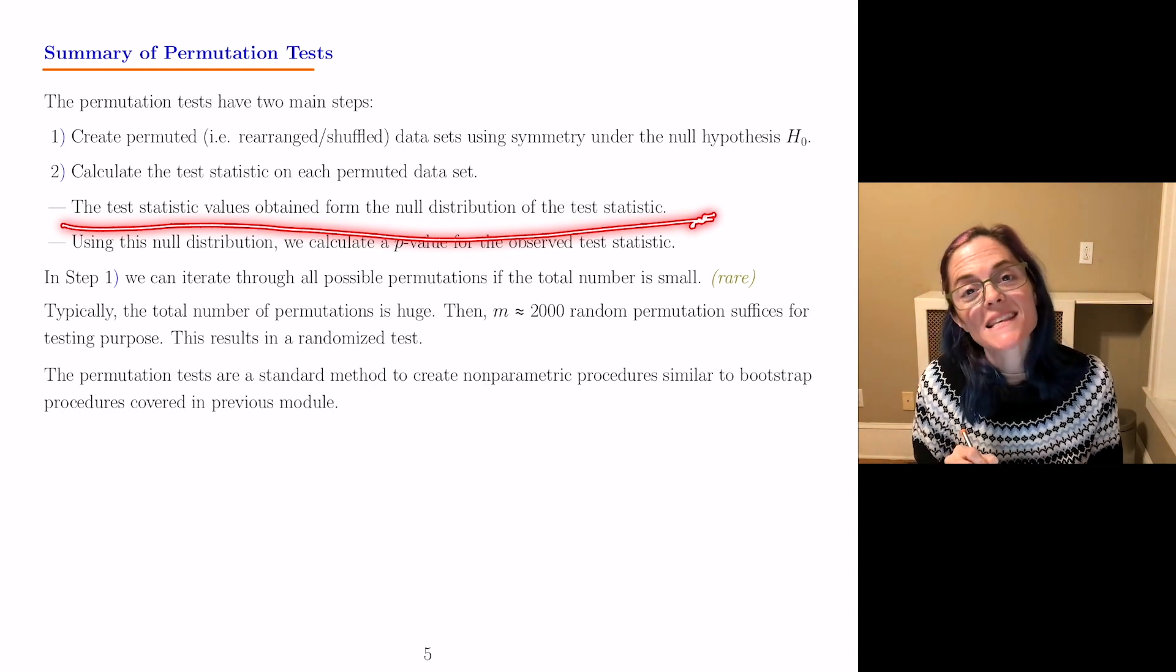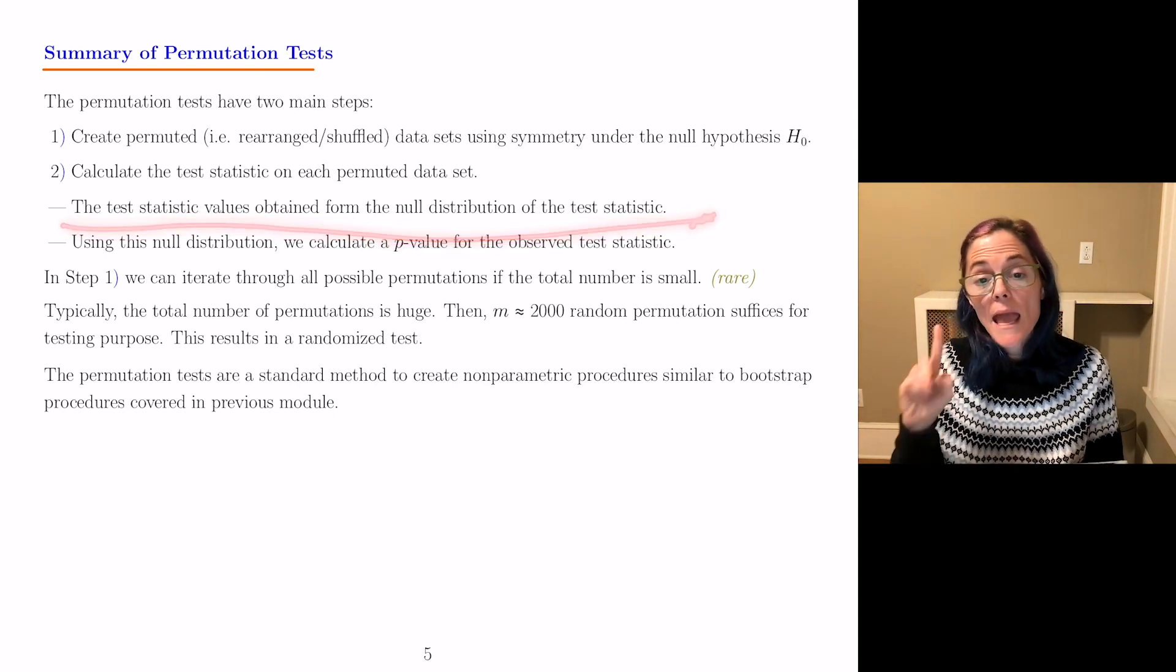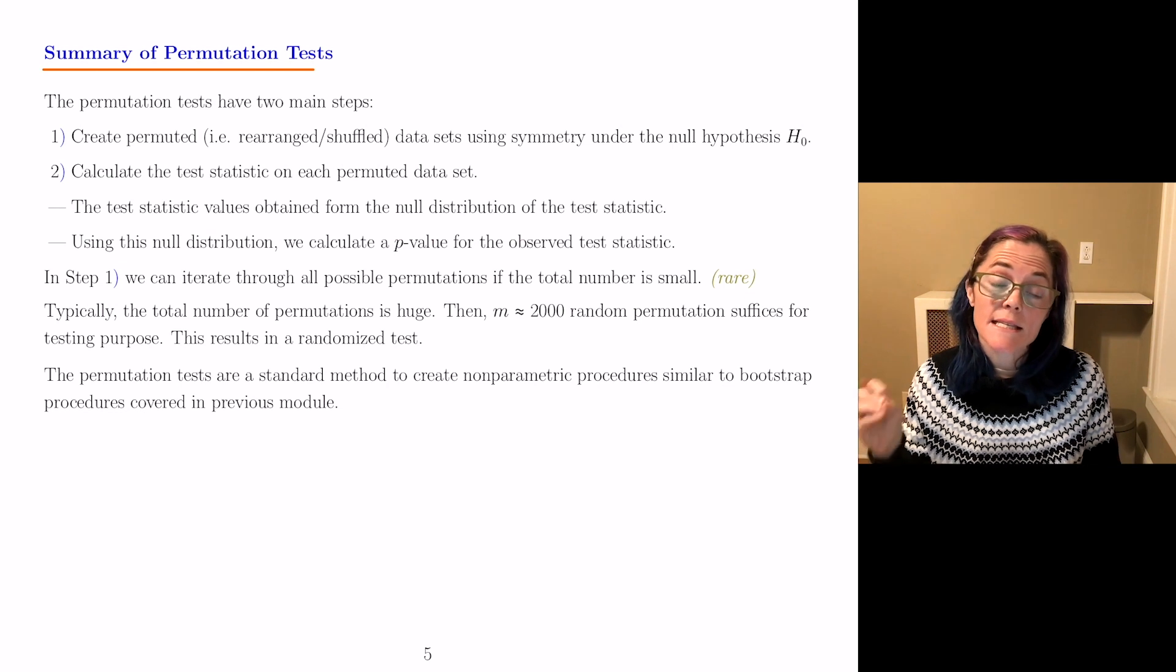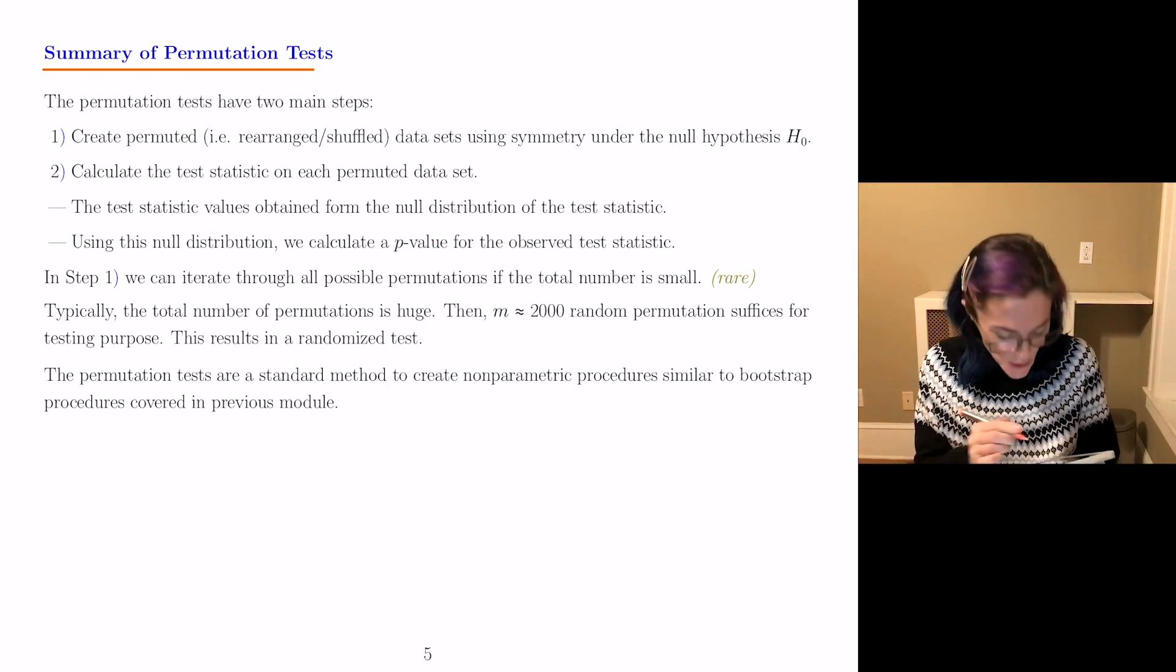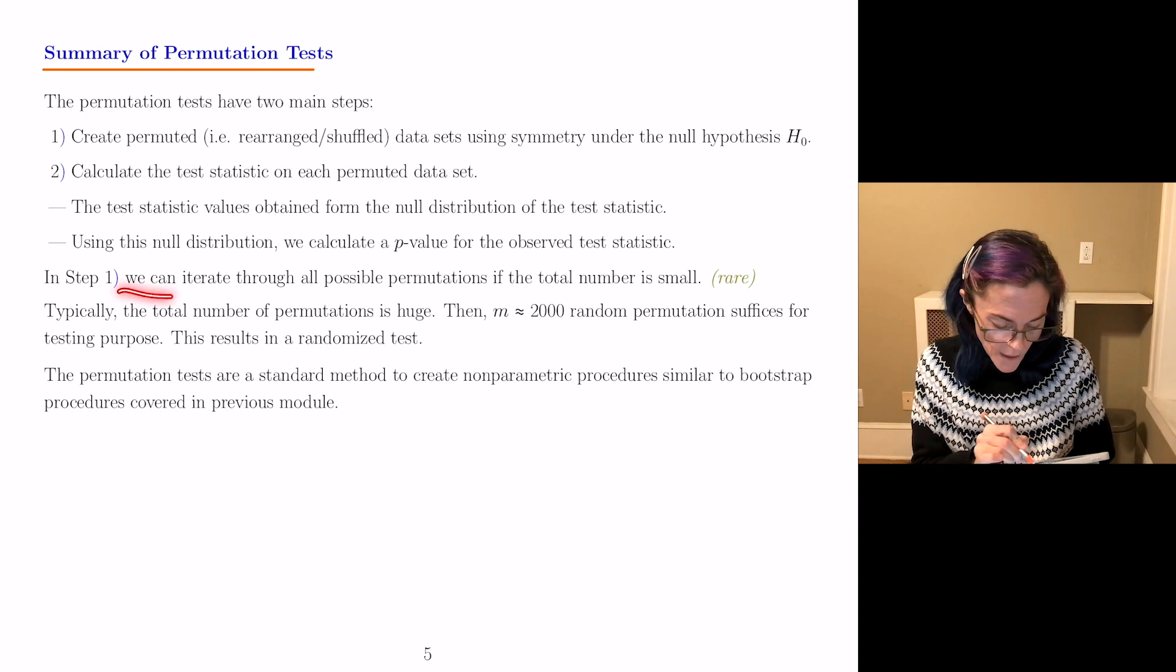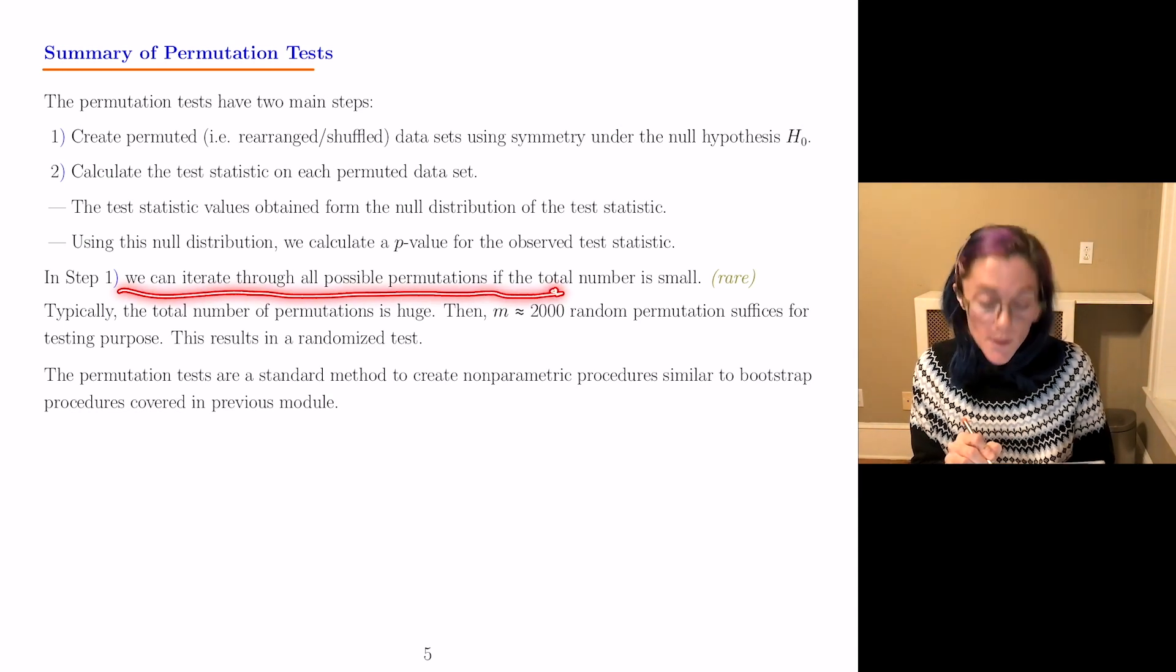Then, we use this null distribution and get a p-value for the test statistic you observed. So, in step one, you can iterate through all possible permutations, provided the total number of permutations is small.